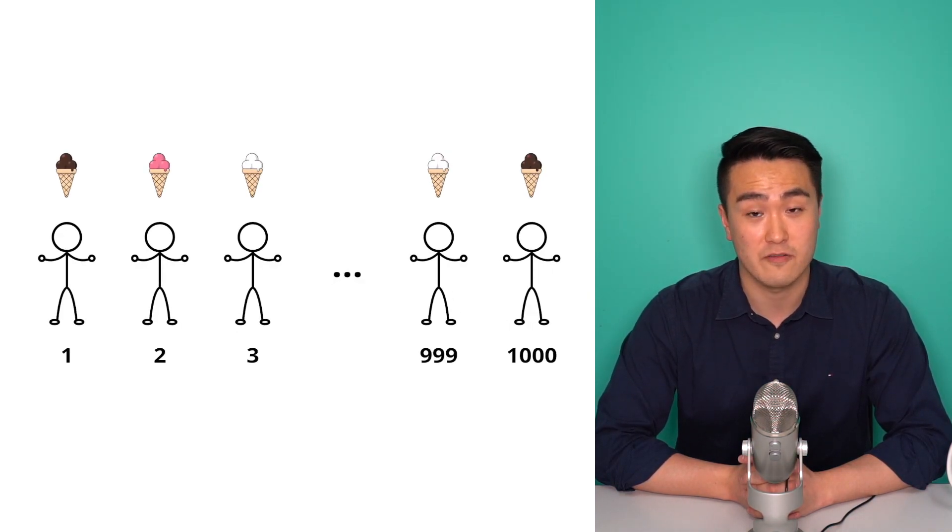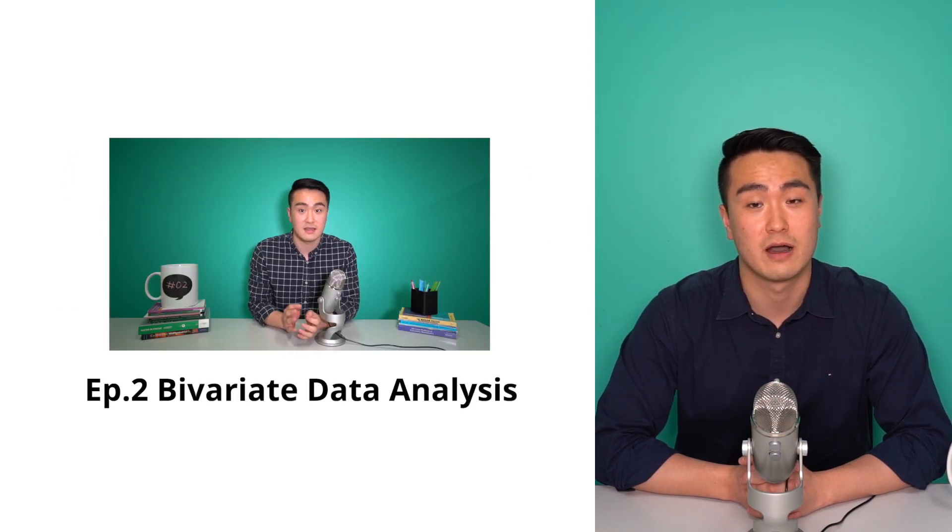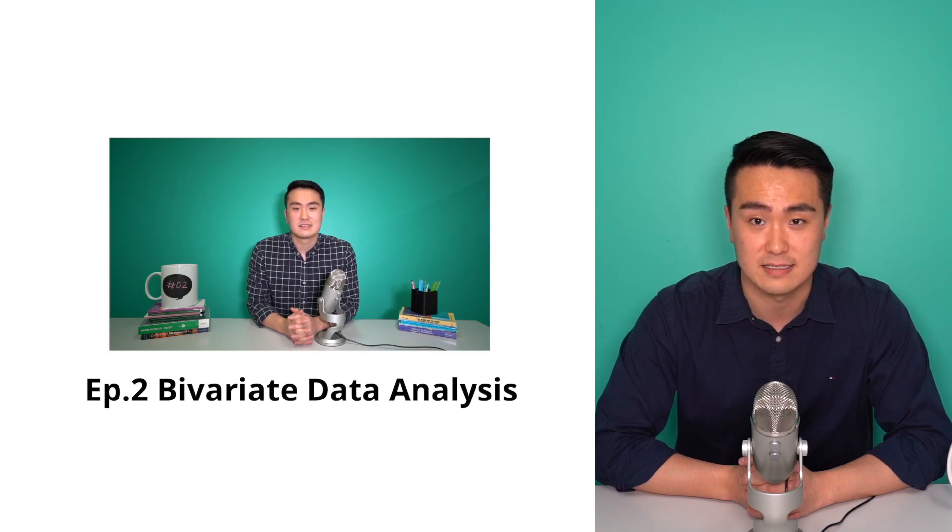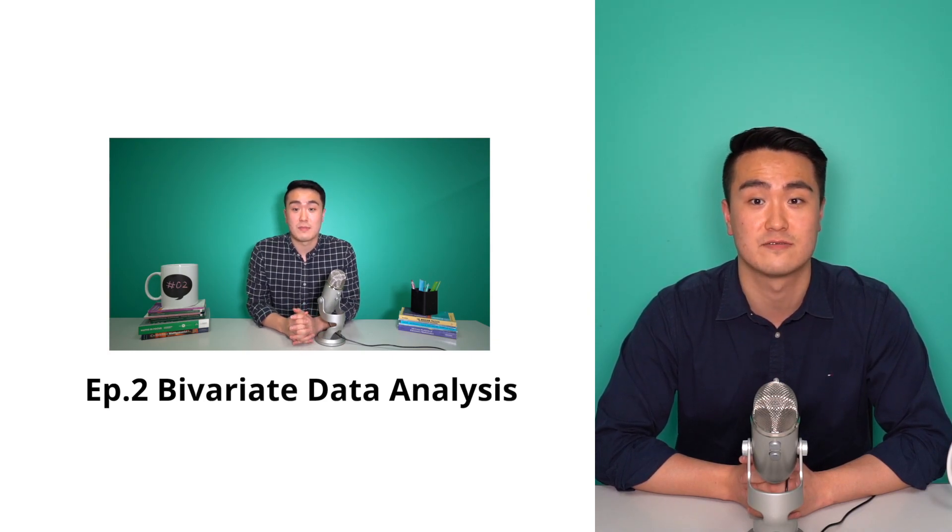For example, a survey of 1000 people's favourite ice cream flavours will contain raw data about one characteristic about a person. Note that in our next episode, we'll be covering bivariate data analysis, which contains two characteristics for each data point.